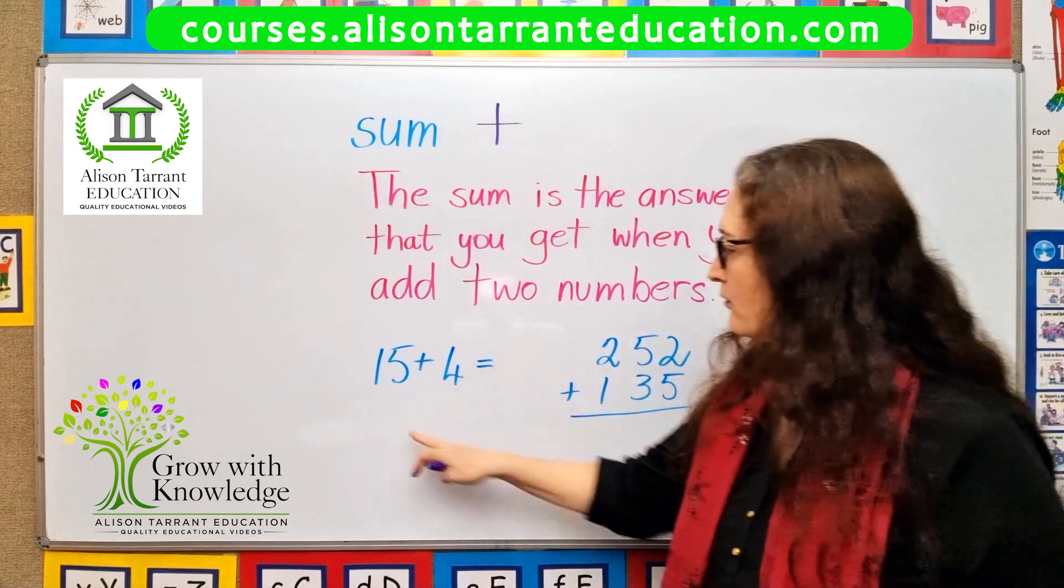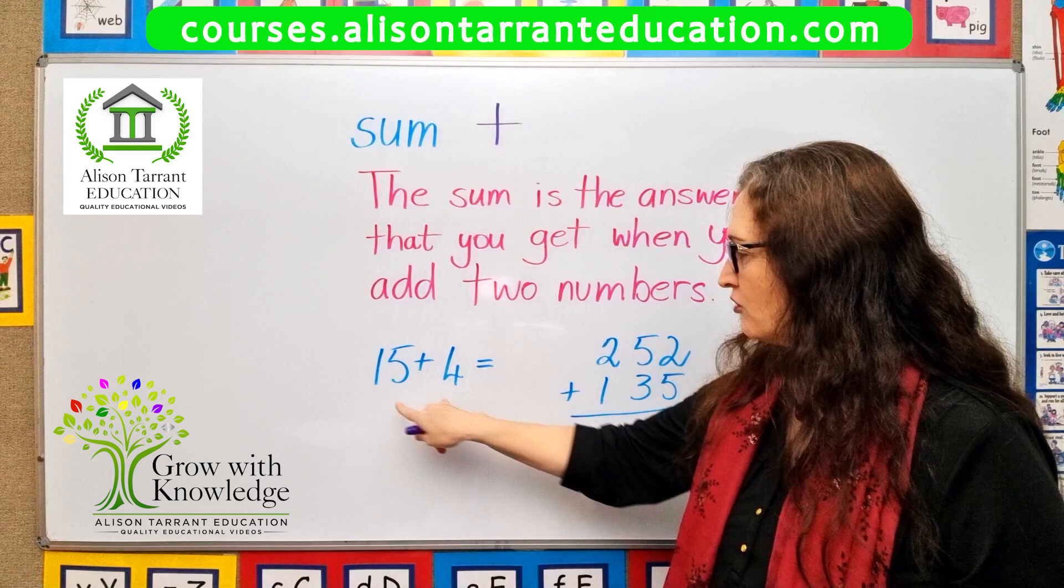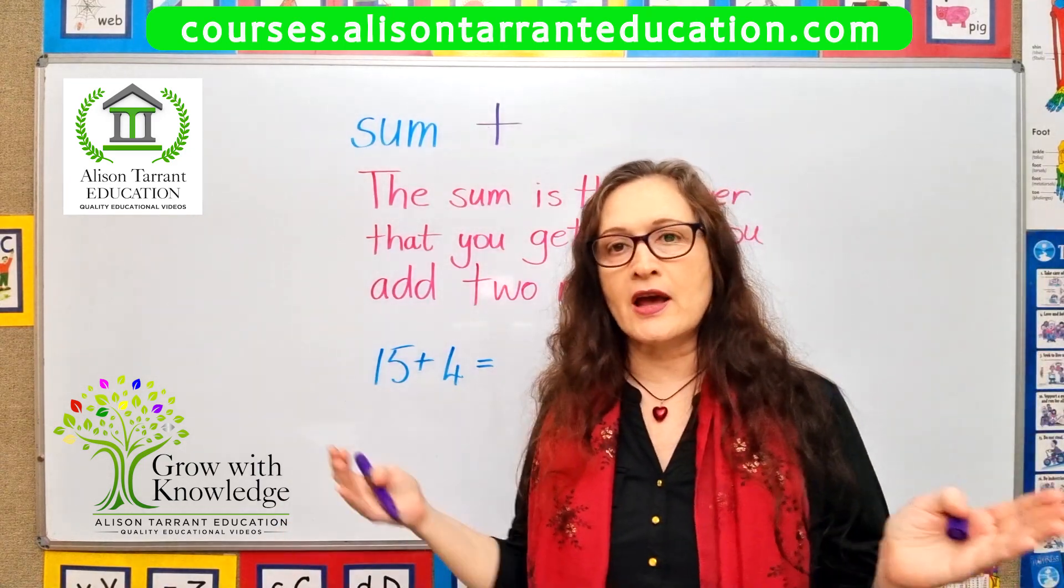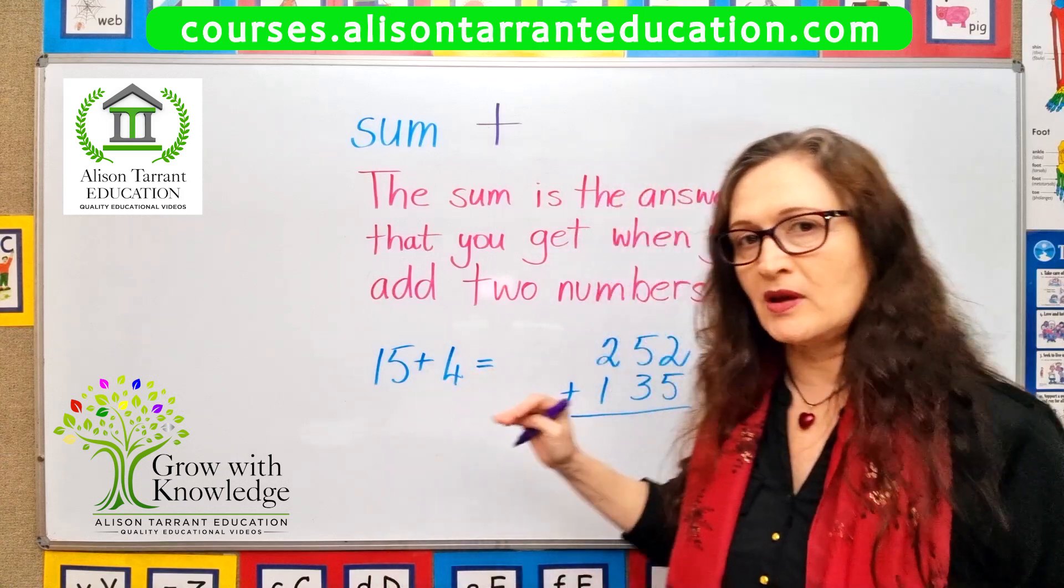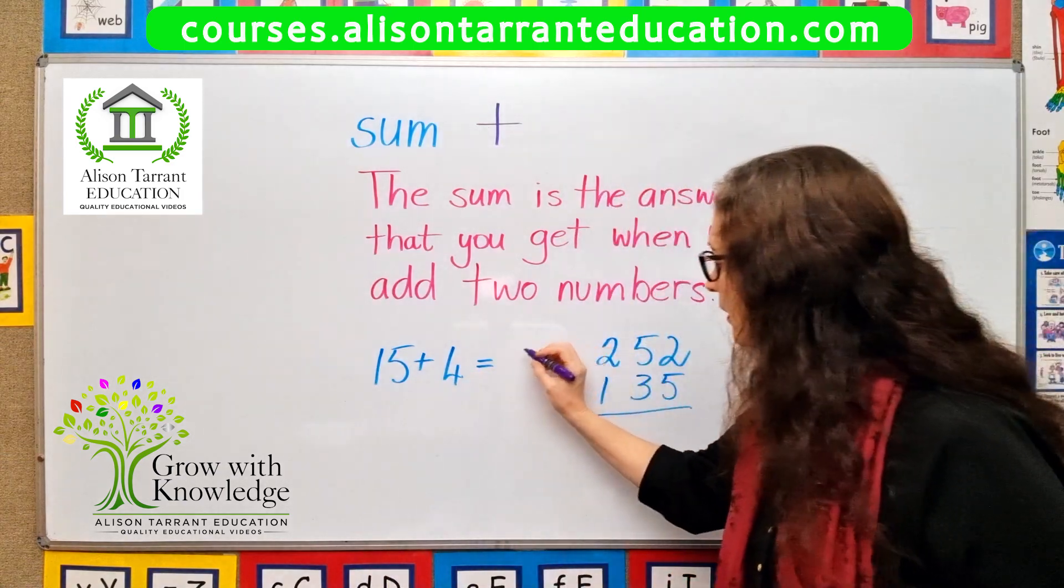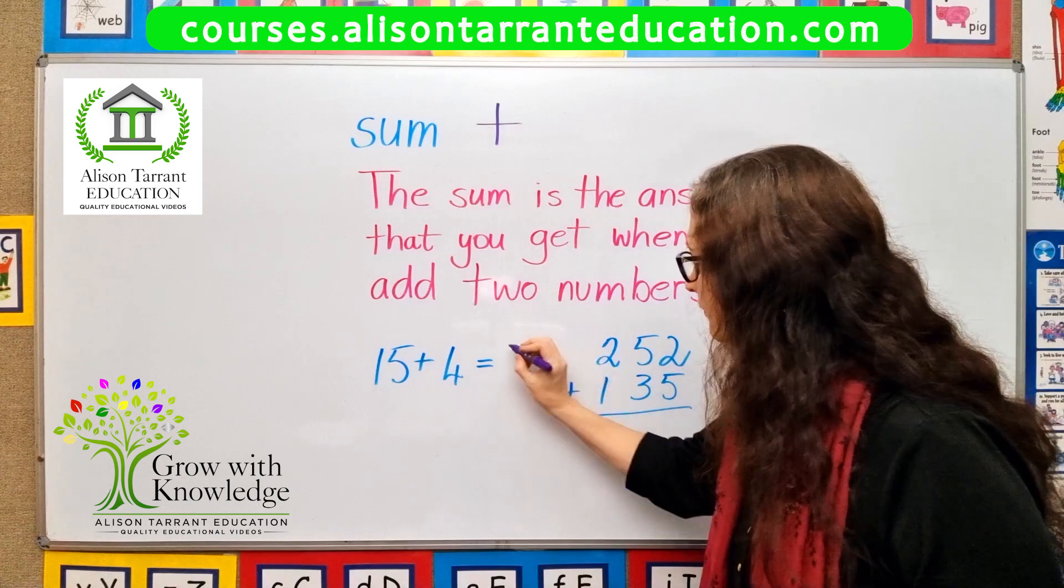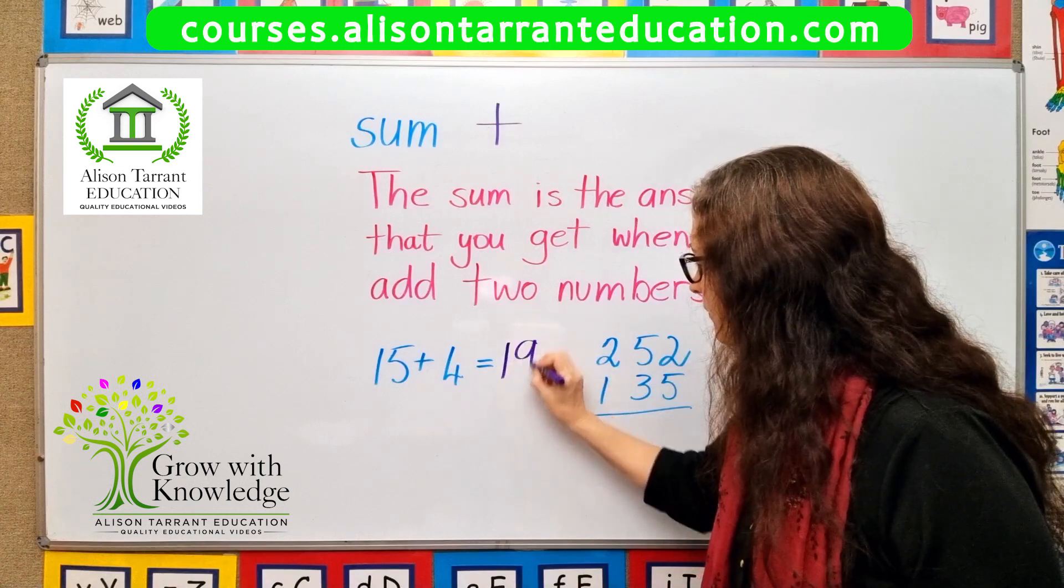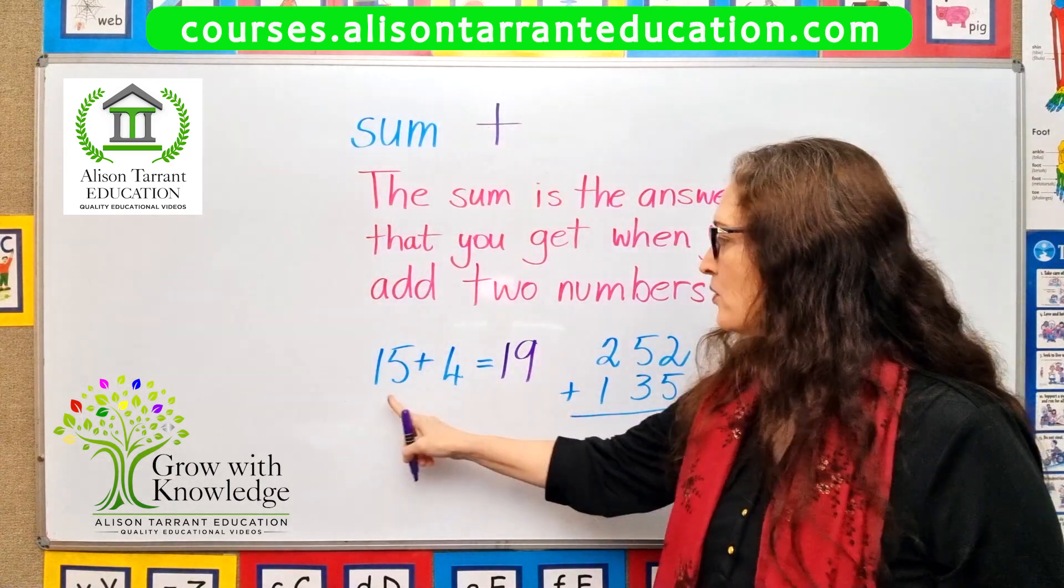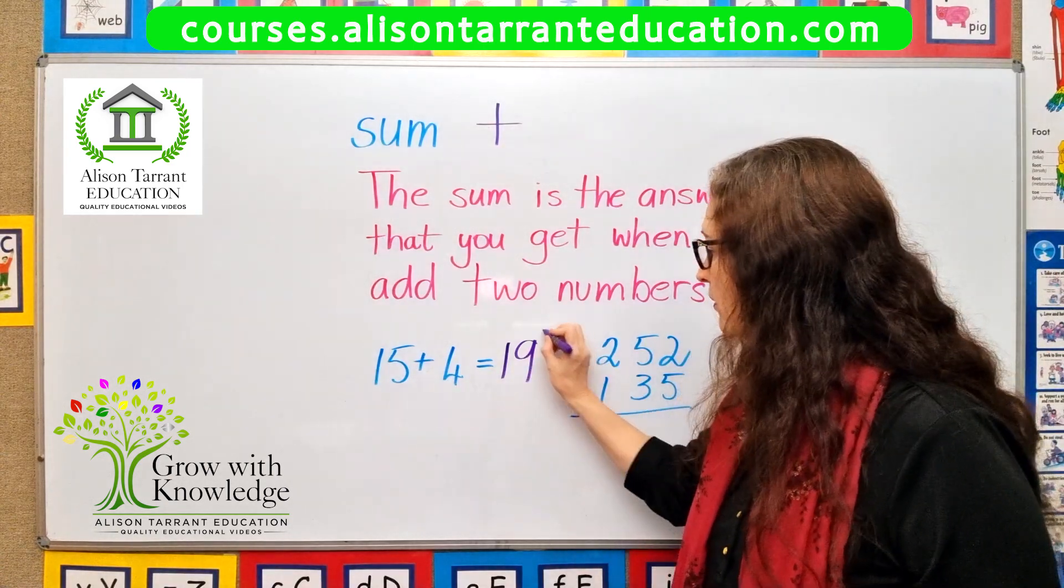So if you have 15 plus 4, there's your two numbers or more numbers. Obviously you can add more than two numbers, but we're just keeping it simple. So 15 plus 4 is 19. So 19 is the sum when you add 15 plus 4. So that is a sum.